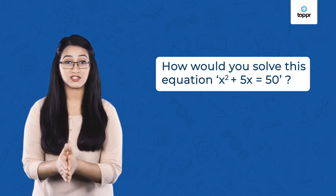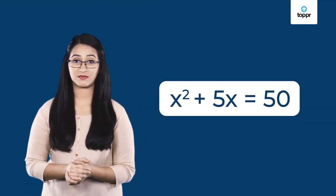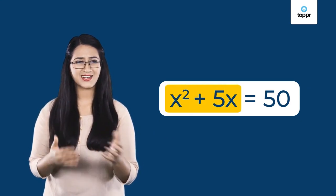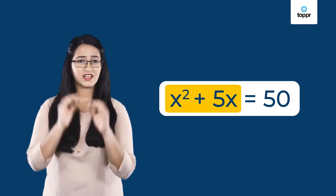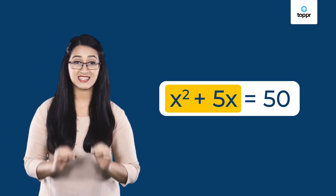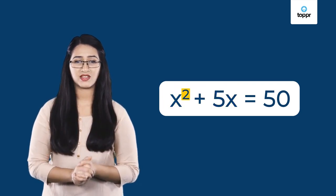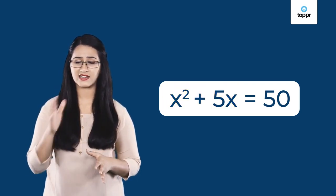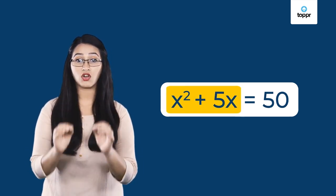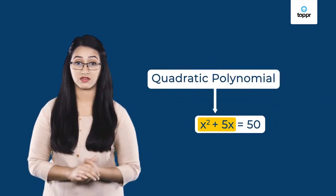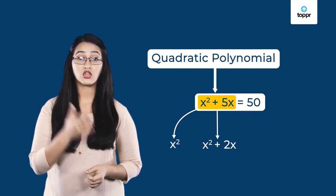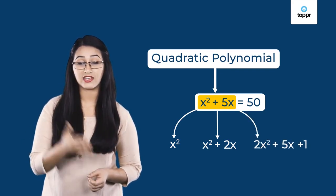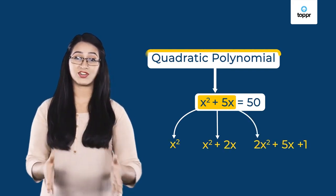We'll learn how to solve such equations later. But for now, take a look at this equation — does the left-hand side look familiar? You might have studied similar expressions before. Notice that the highest degree of this expression is 2. You might remember from earlier lessons that expressions of this kind are called quadratic polynomials. So, expressions like X², X² + 2X, and 2X² + 5X + 1 are examples of quadratic polynomials.